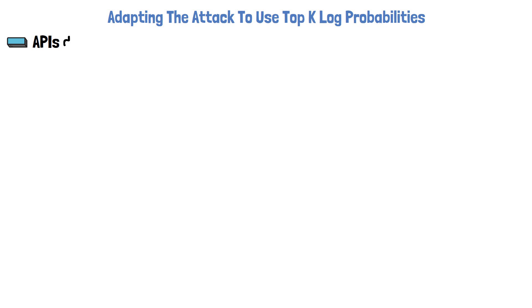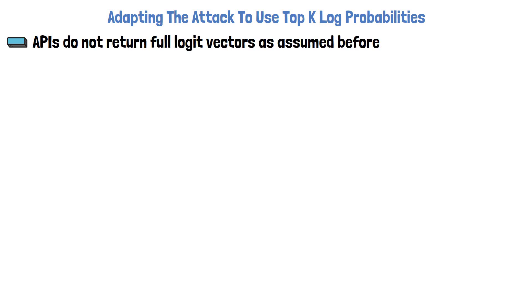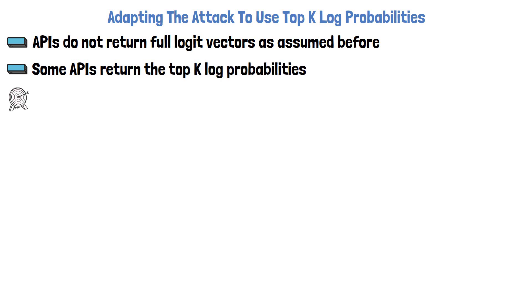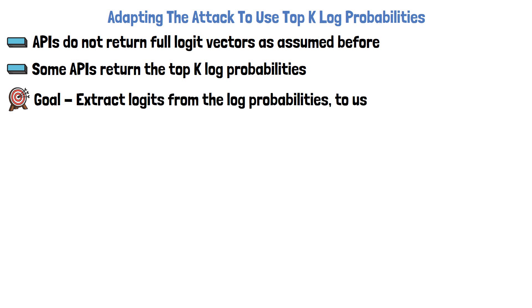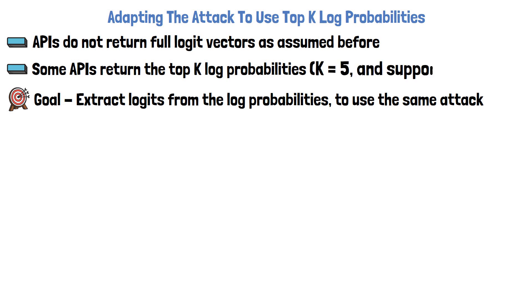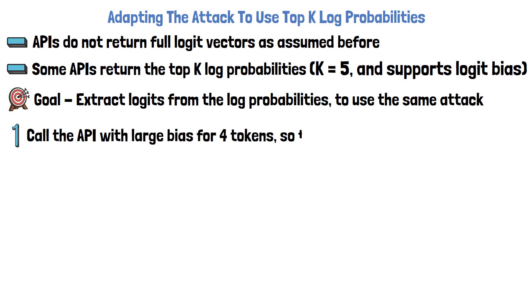Until now we've made a significant assumption that we can get a full logit vector for each prompt, but in reality we do not get that. What we get instead are the log probabilities of the most likely tokens. In order to use the attack we just saw, we need to show that given an API that returns only the top log probabilities, we can recover the full logit vector. Say we get the top five log probabilities and can add a logit bias to the API query. First, we call the API with a large logit bias for four tokens only — the bias is large enough so that these four tokens will be part of the top five log probabilities. The fifth log probability in the top five is used as a common reference between the bias tokens.